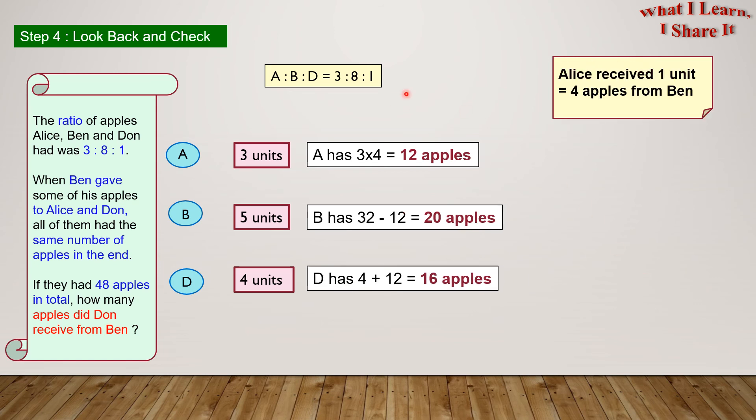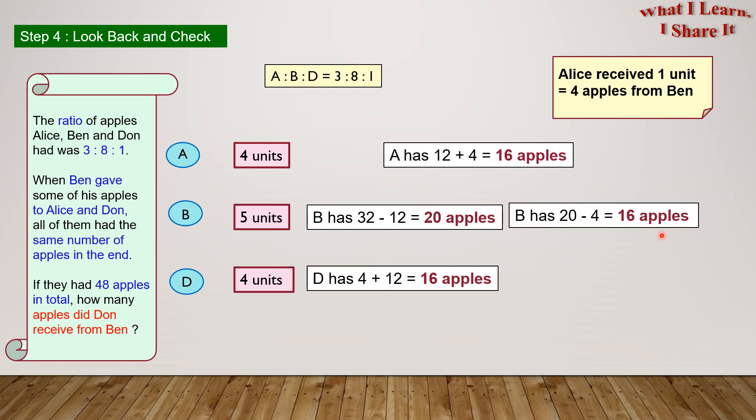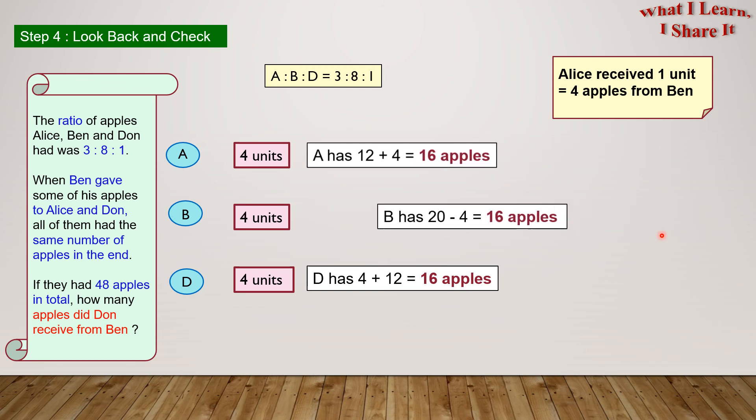And also, Alice received 1 unit or 4 apples from Ben. So A now has 12 plus 4 equals to 16 apples, and B has 20 minus 4 equals to 16 apples.